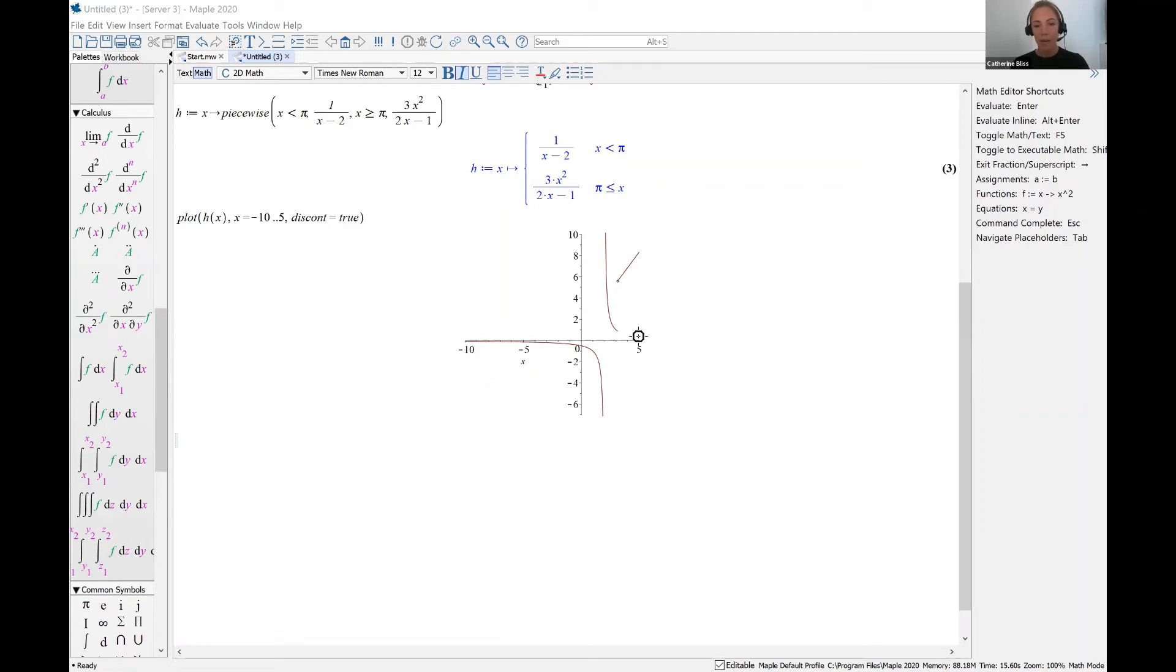And when we take a look at the plot, we see that there's kind of two natures or two flavors to this function. When x is less than pi, and that's about here at 3.14, we have this rational function with a vertical asymptote located at x equals 2.